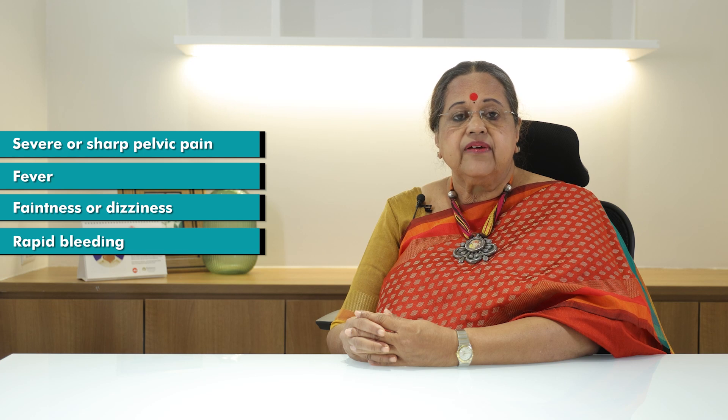Sometimes an ovarian cyst can have complications like bursting — either the cyst bursts, called a ruptured cyst, or the ovary undergoes a twisting called ovarian torsion. In those cases the symptoms are severe or sharp pelvic pain, fever, faintness or dizziness, and rapid bleeding.